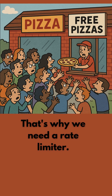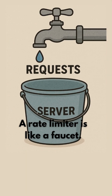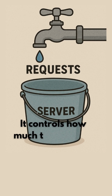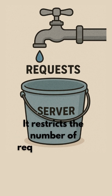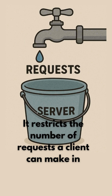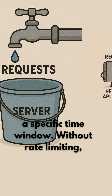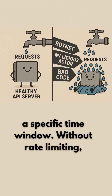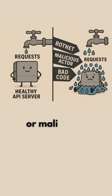That's why we need a rate limiter. A rate limiter is like a faucet — it controls how much traffic flows to a server. It restricts the number of requests a client can make in a specific time window. Without rate limiting, systems can be overwhelmed by accidental or malicious traffic.